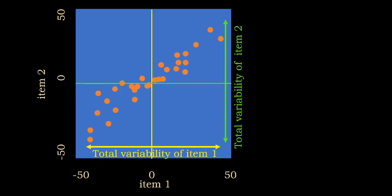In principal component analysis, we are going to start with a number of items. Here we have a representation of two items only — item one and item two — but it could be any number of items. We are going to reduce the data to a number of components. So instead of dealing with 30 variables, one per item, we are going to try to find variables that are more related to each other, and with those variables we are going to create a component.